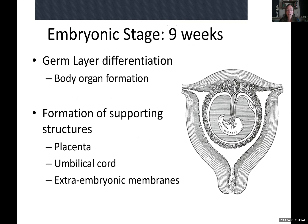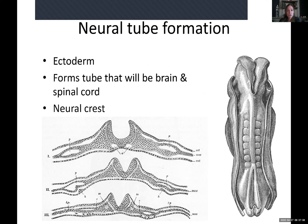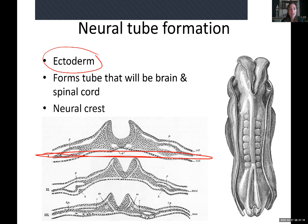The embryonic stage lasts nine weeks — this is the first trimester. During this time we go through germ layer differentiation (endoderm, mesoderm, ectoderm), form the placenta, make the umbilical cord, and develop extra-embryonic membranes. The neural tube forms from the ectoderm: we start as a flat pancake, ridges form along the dorsal midline, and those ridges curl up and fuse together — like folding a piece of paper so the raised ridges meet — forming a tube.